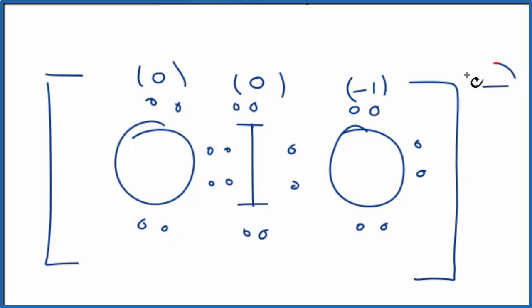That's okay, because the overall ion has a -1 charge. So this is the best structure for IO2-, where we have a double bond between the oxygen and the iodine, and then a single bond here. This is Dr. B with the Lewis structure for IO2-. Thanks for watching.